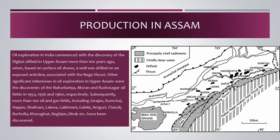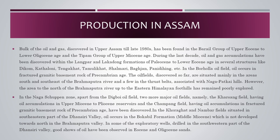Subsequently, more than 100 oil and gas fields, including Jorajan, Koomchai, Hapjan, Shalmari, Lakhwa, Lakhmani, Geleki, Amguri, Karali, Bohua, Khoraghat, Bagjam, Dharok, etc., have been discovered. The bulk of the oil and gas discovered in Upper Assam till the late 1980s was found in the Barail group of Upper Eocene to Lower Oligocene age and the Tipam group of Upper Miocene age. During the last decade, oil and gas accumulations have been discovered within the Langpur and Lakadung formations of Paleocene to Lower Eocene age in several structures like Dekom, Kathaloni, Tengakhat, Tamulikhat, Shalmari, Bagjam, Panidying, etc.